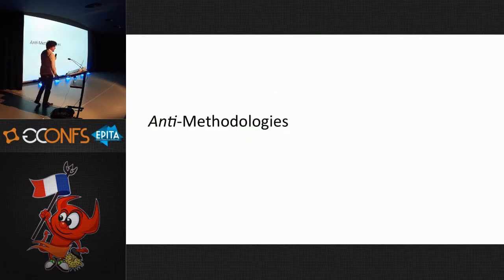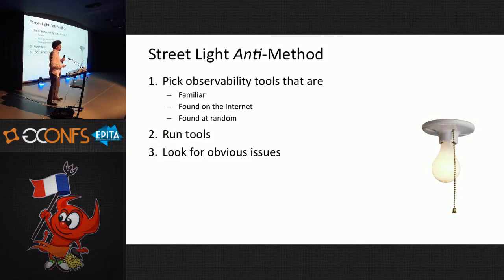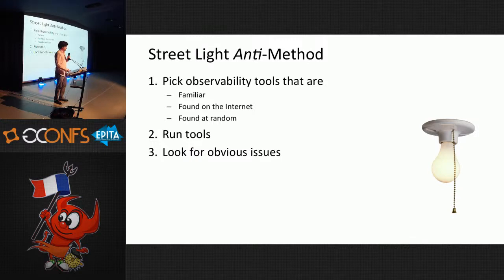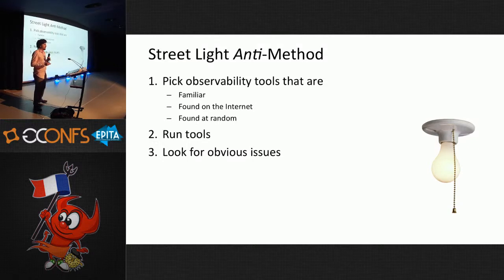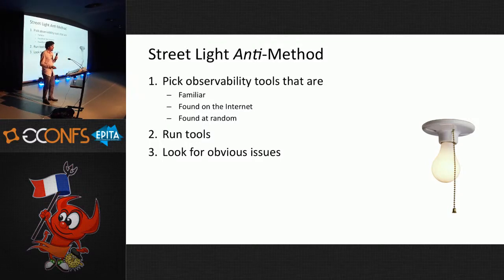Some anti-methodologies to start with, so you can understand methodologies. The first is what I call the streetlight anti-method, from a parable about a drunk looking for his keys under a streetlight — he's looking there not because he lost them there, but because that's where the light is best. I see this often in performance analysis: people will run top because they always run top, instead of using more advanced or appropriate tools. They'll run things at random. Sometimes it works, but it can waste time, send you in circles, and miss things due to blind spots.